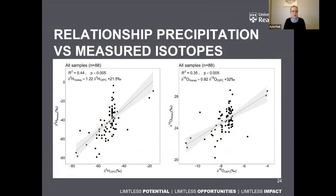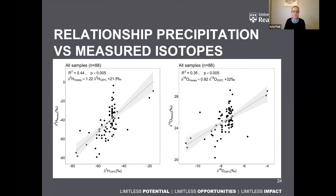After measuring all those isotopes, we look at the relationship between the precipitation and measured isotopes. The grey area shows the relationships with the trend line, and both oxygen and hydrogen showed a statistically significant relationship — the measured isotopes in bulk honey versus the isotopes in precipitation. I've tried to highlight where different samples came from on the next slide, which looks a bit busy, but I'll walk through it step by step.